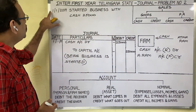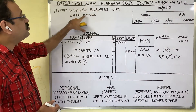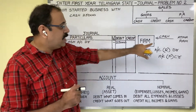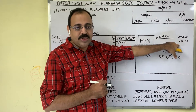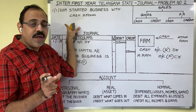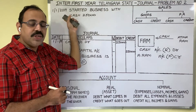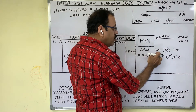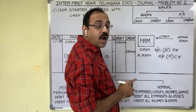The first transaction is on 1st January 2019. The transaction is: started business with cash 25,000 rupees. In the question the owner name is given as Atmaram. So Atmaram started business with cash 25,000 rupees. While writing the journal entry, we should identify minimum 2 accounts from every business transaction. In this transaction, two accounts are: cash is coming into the firm — cash account is one account, and Atmaram is giving that cash — Atmaram account is another account.